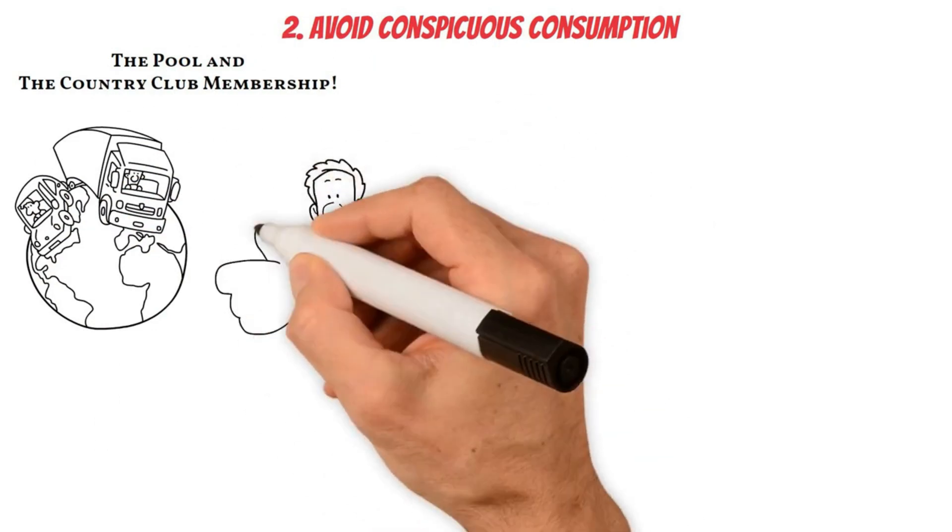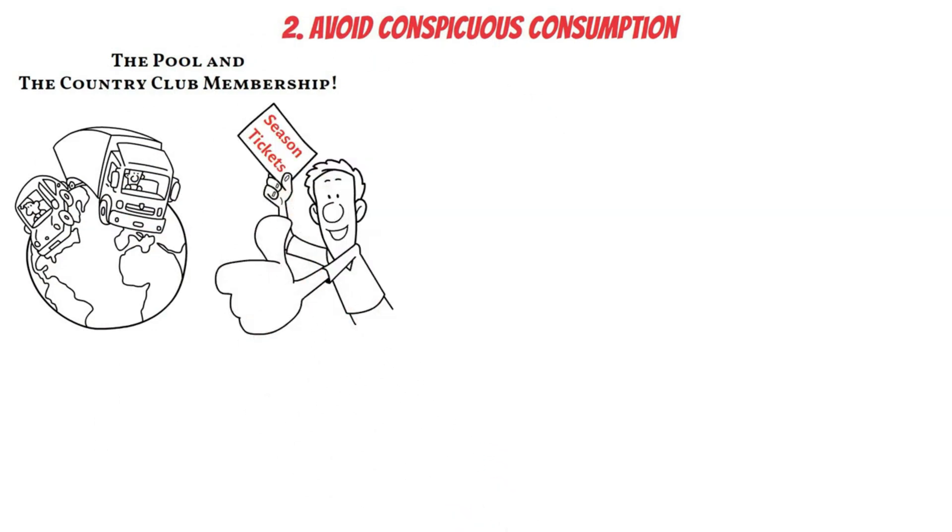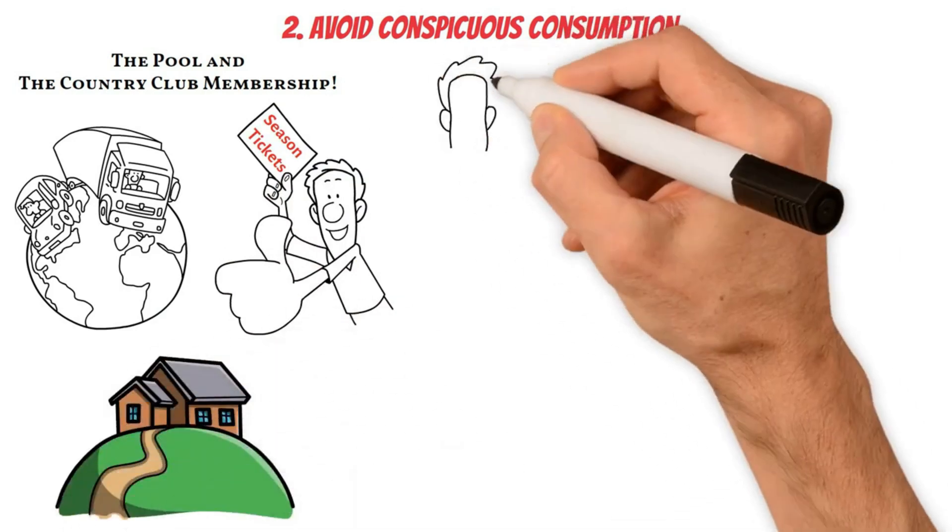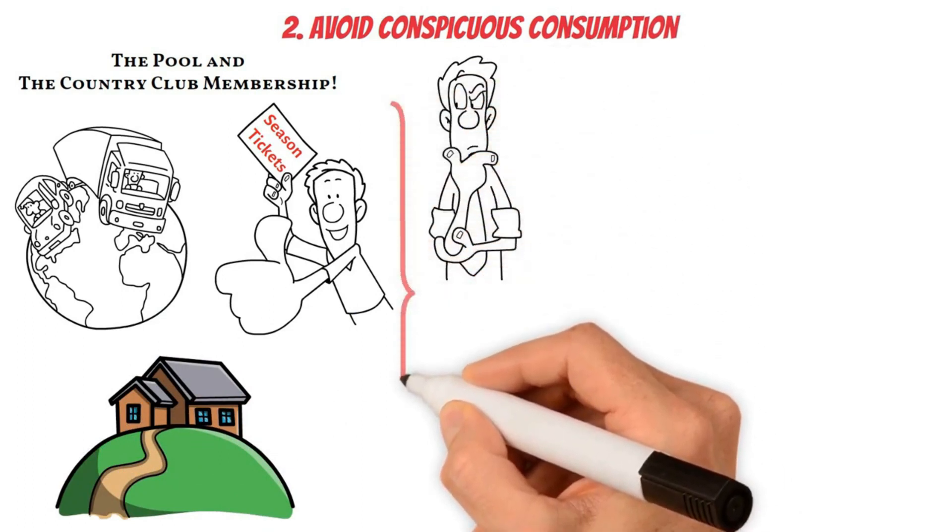Remember to add the season tickets with box seating to the list. What about that second home in the mountains? You see where I'm headed with this. These costs pile up.